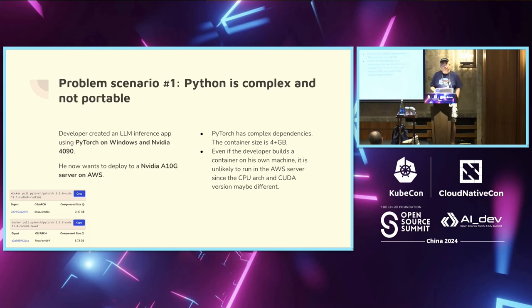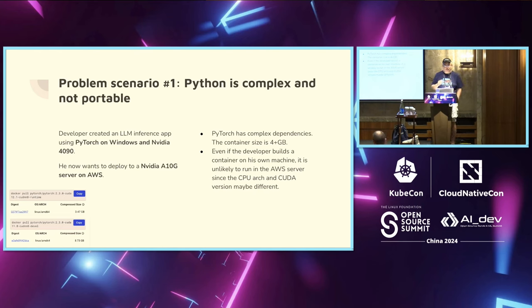And it doesn't address the portability problem anyway, because when Kubernetes sees a Docker image with Python specifically tailored to NVIDIA, it would have difficulty orchestrating it — it would need a software change for the Python application to use a different GPU card. So, can you do it with Python? You can use Python to embed a large language model into your own application, but it's very undesirable.